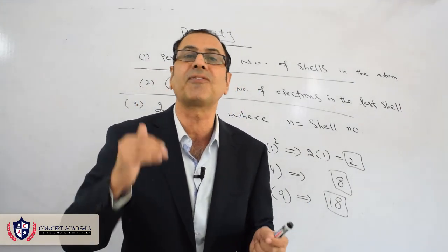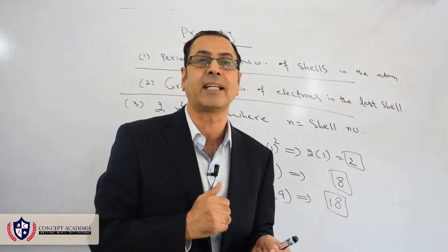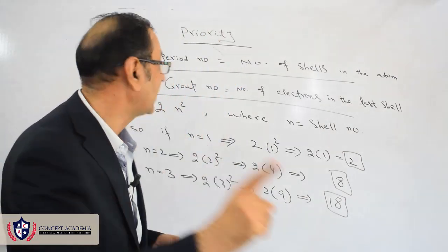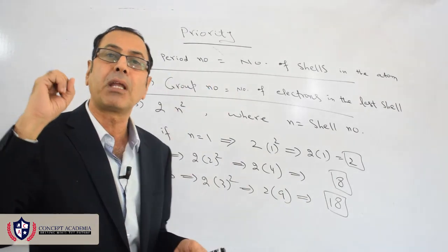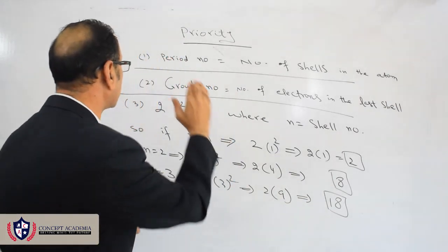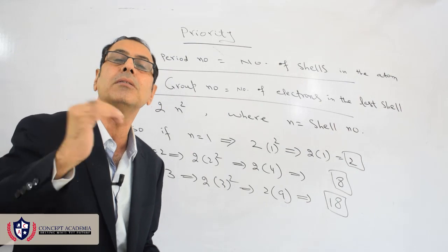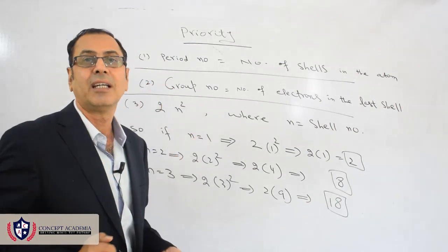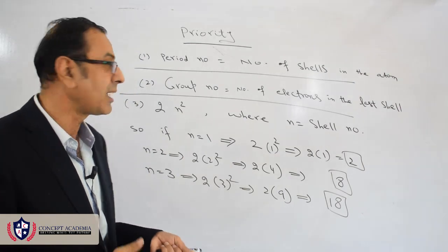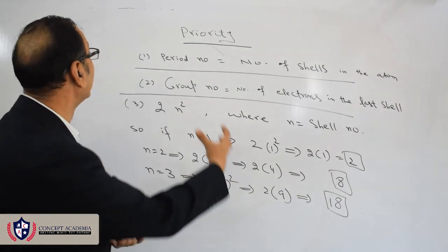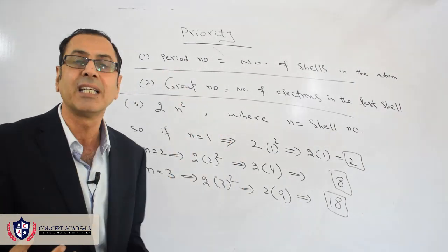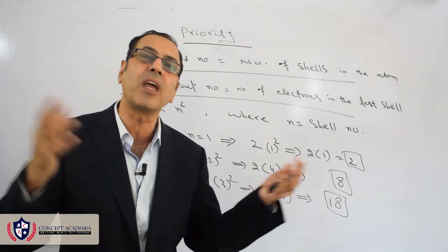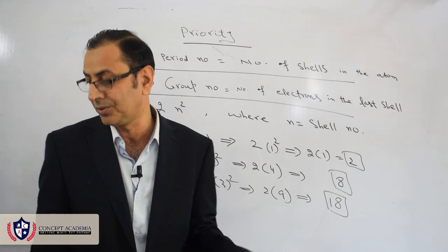We should not forget that priority number one is the period number, priority number two is the group number, and the 2n² rule has the last priority. I am going to apply these three points to draw the electronic configuration of various atoms.